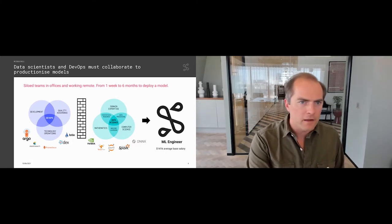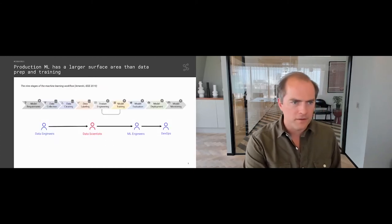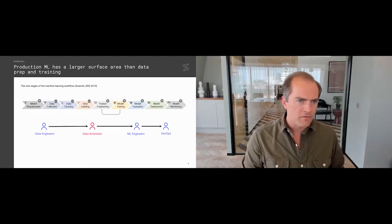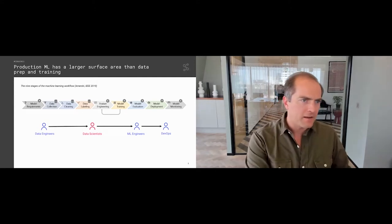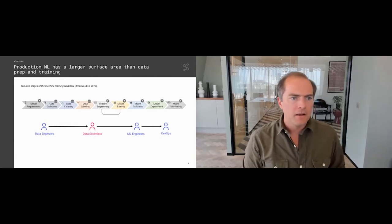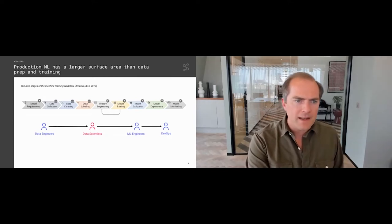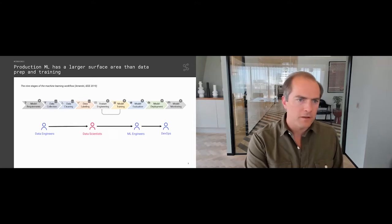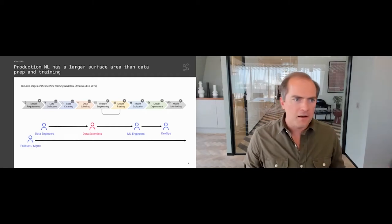Let's dive deeper into the workflow and life cycle of machine learning models. In the early stages it's really about managing and collecting data, cleaning it, labeling it — data engineers passing something useful over to the data scientist. Once the data scientist has built their model, they hand it over to the ML engineer, and once it's in production they hand over to the DevOps people. Throughout this entire process it's important that product leads are engaged.